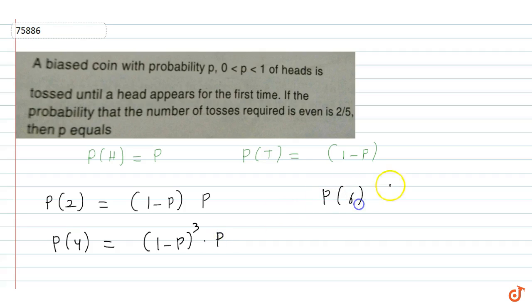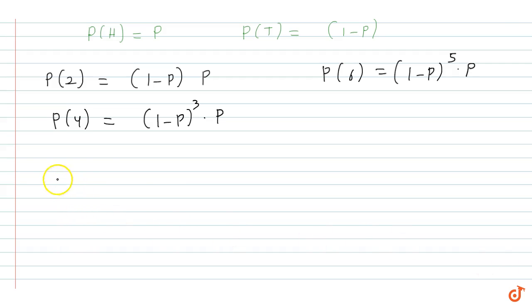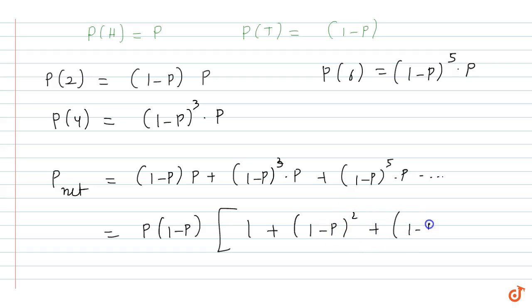So we can see p net, we have 1 minus p into p, then plus 1 minus p whole square into p, then we have cube, then next time we have plus 1 minus p power 5 into p and so on. Then here we see p into 1 minus p if we take common, then here we see p into 1 minus p whole square, then plus 1 minus p power whole 4 and so on, then directly up to infinite terms.